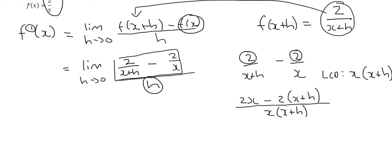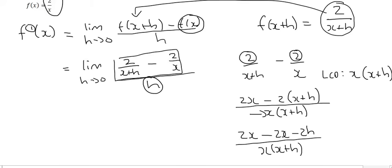You don't want to multiply out your common denominator—leave it as is. But we can neaten up the top by multiplying the negative into the bracket. The 2x's cancel, so we end up with -2h over x(x+h).